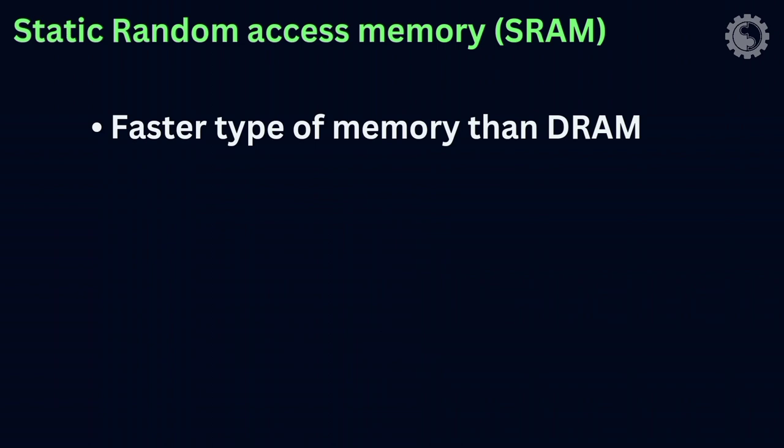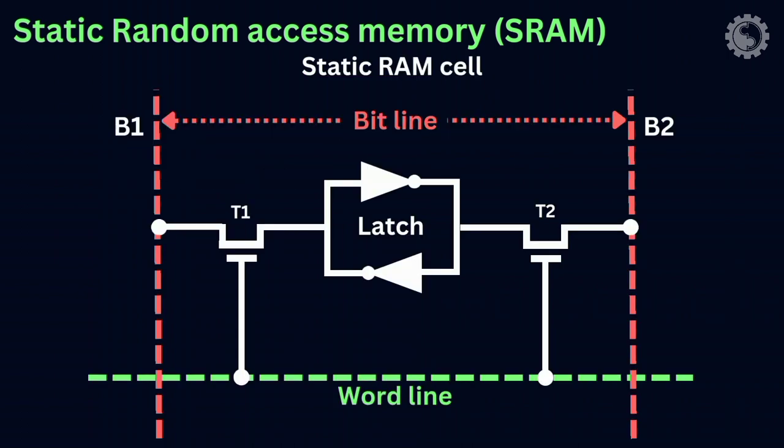Static random access memory (SRAM) is a faster type of memory than DRAM, but it is also more expensive. In static RAM, the memory cell is implemented using two inverters that are cross-connected to form a latch, and this latch is connected to two bit lines, which are connected to two transistors. The transistors act as switches that can be closed and opened under control of the word line.